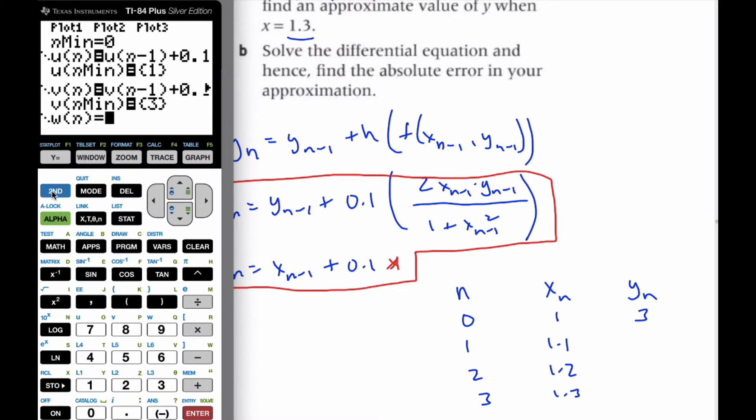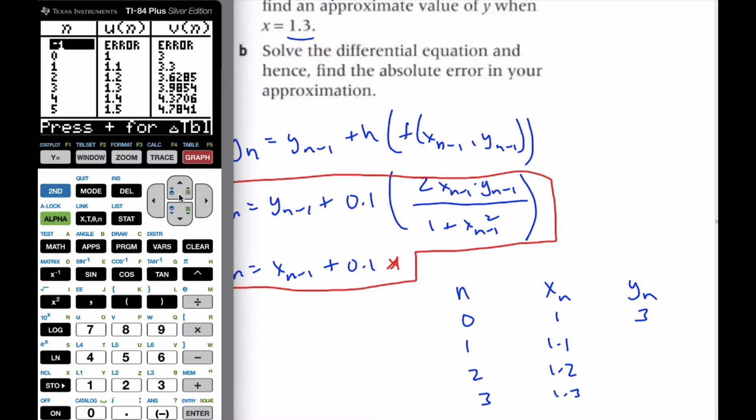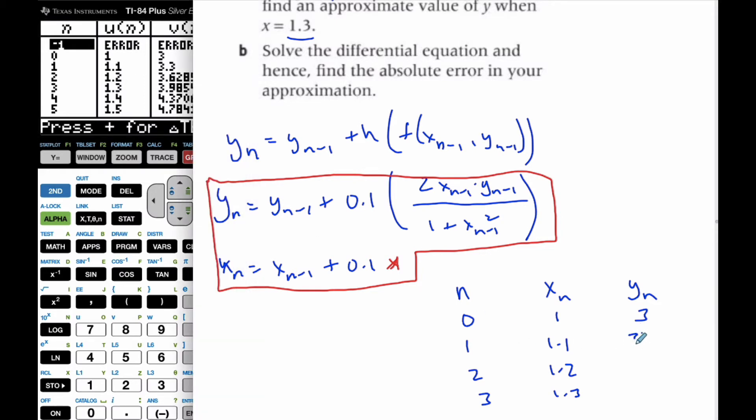So now when I go to my table, I get 1.3, and then 1.1 is going to be 3.3, and then 3.628, and then finally,